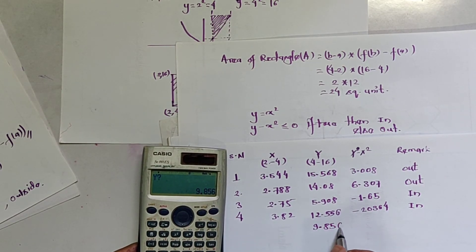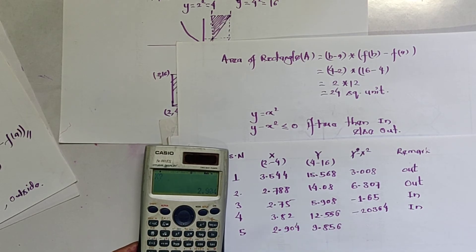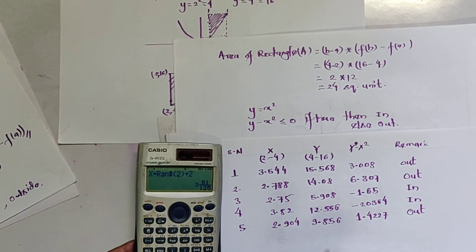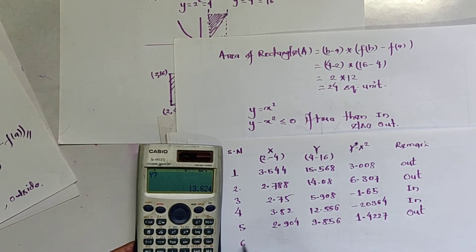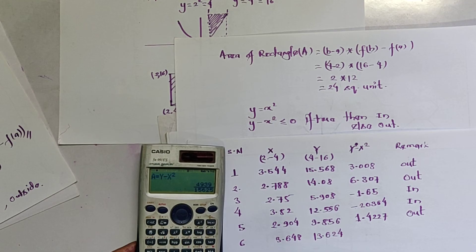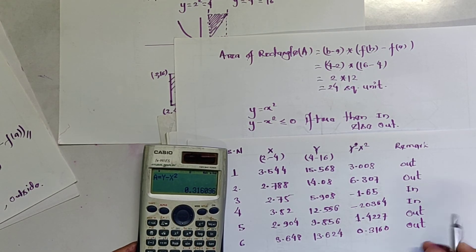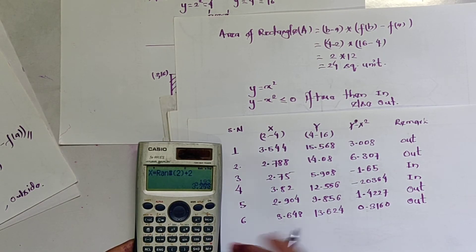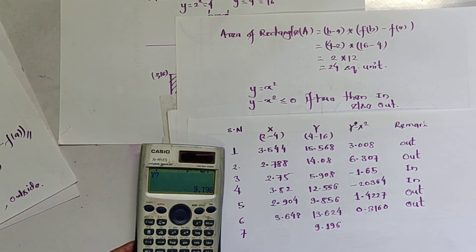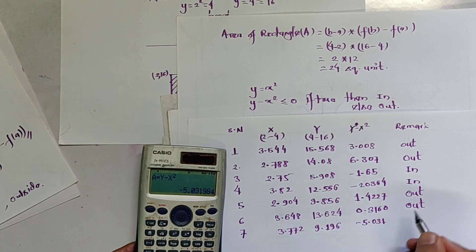Iteration 5: y = 9.856, x = 2.904; value is 1.4227, positive, so outside the region. Iteration 6: y = 13.624, x = 3.648; value is 0.3160, positive, so also outside the region. Iteration 7: y = 9.9996, x = 3.772; value is −5.031, negative, so it is inside the region.